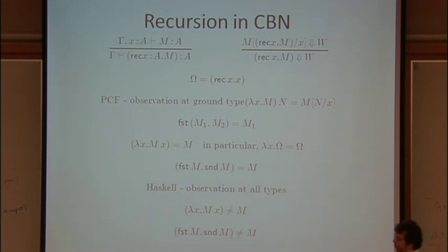In a call by name language we can add recursion at any type, hence the fact that real call by name programming languages let you define infinite data structures as well as recursive functions. So the typing rule is a bit simpler. So rec X dot M has type A if you can prove that M has type A under assumption that X has type A.